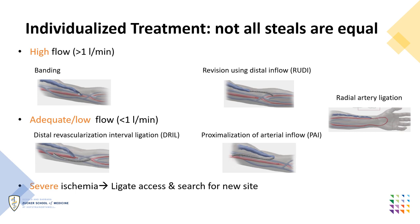High-flow fistulas with over one liter per minute of flow can be treated with banding or RUDI, while low-flow access can be treated with DRIL or proximalization of arterial inflow. Radial artery ligation can be considered for any radiocephalic fistula irrespective of flow, as long as the palmar arch is intact. In cases of severe ischemia, especially when digital gangrene is present, ligation of the HD access should be considered.